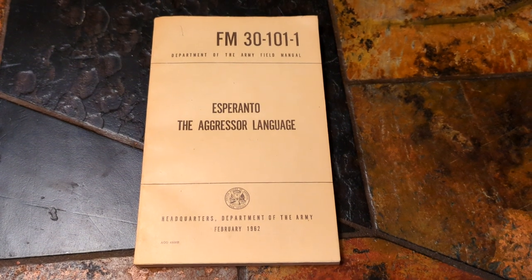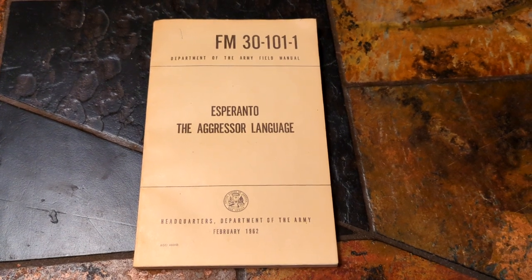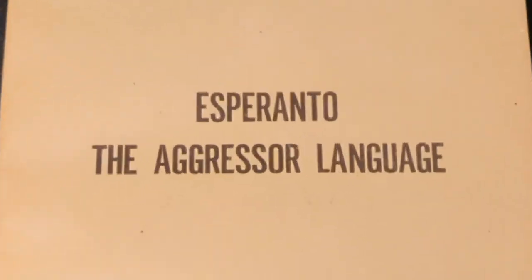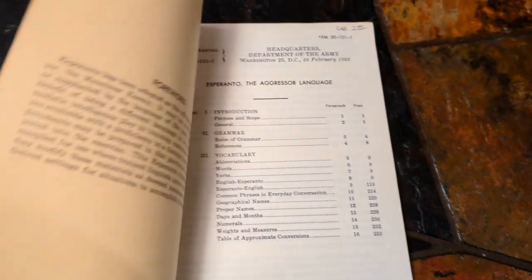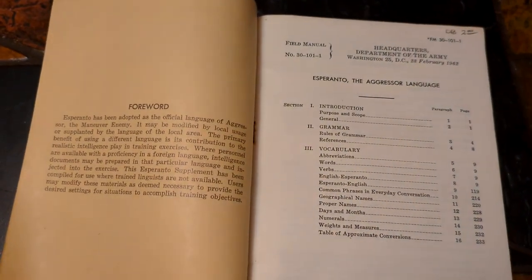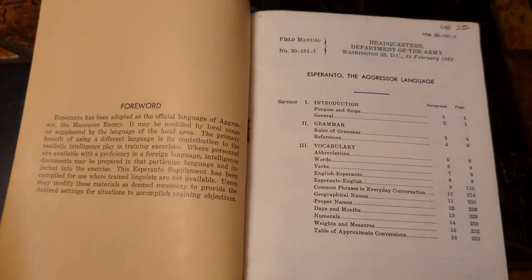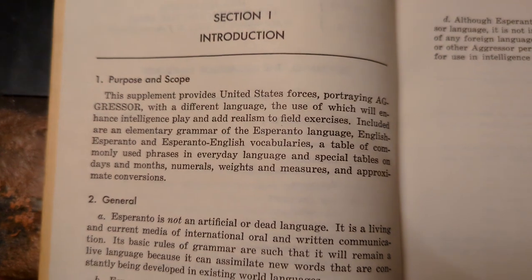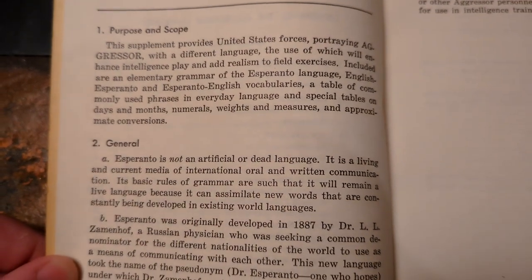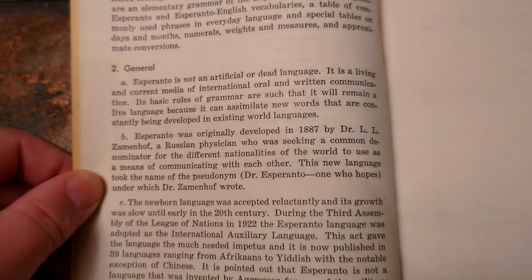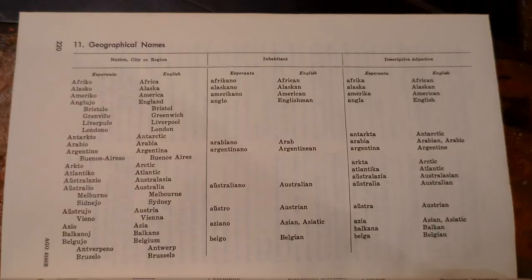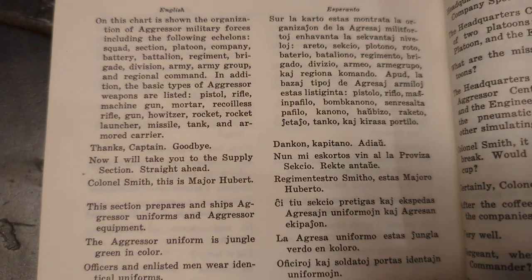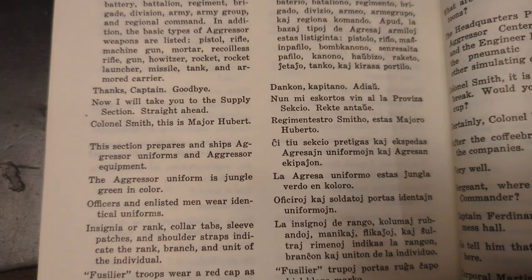Did you know that the US military published an Esperanto guidebook in the 1960s? It's perplexingly called Esperanto the Aggressor Language. See, they were doing a bunch of big war games in which the US was at war with an unspecified European nation known only as Aggressor. The enemy soldiers couldn't be speaking English, obviously, but choosing any existing language would get political really fast, so they used Esperanto. I have no idea how many soldiers actually tried to learn it just to make interrogation scenes more realistic, but it's actually a pretty good guide to the language. This copy is definitely one of my favorite cursed physical artifacts.